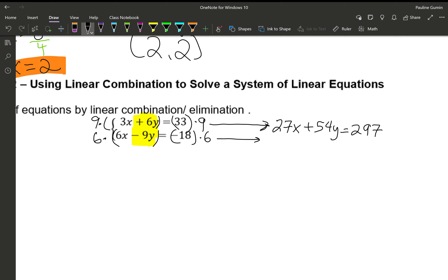6 times 6, 36X. Minus 54Y. Equals negative 108. And now we can go ahead and add them because we made our Y's opposite. So the Y's are gone. 27 plus 36 is 63 X's. 297 plus negative 108 is 189. And we finished by dividing both sides by 63.